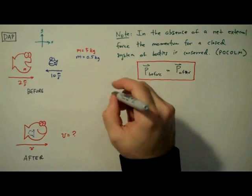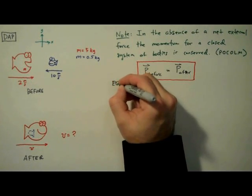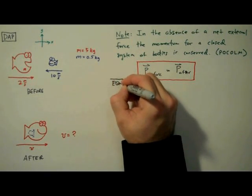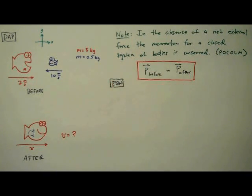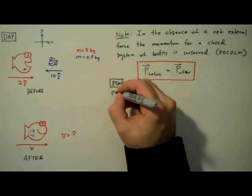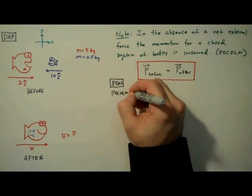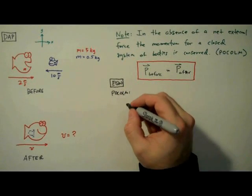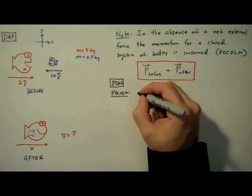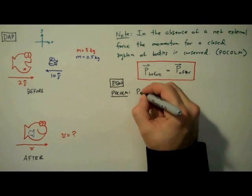By the way we can't use POLCOM, the principle of conservation of energy, to solve this problem because the kinetic energy in a perfectly inelastic collision is not conserved. Some of that kinetic energy during the collision is transformed into internal energy. So of course we're going to use POLCOM to solve this problem.